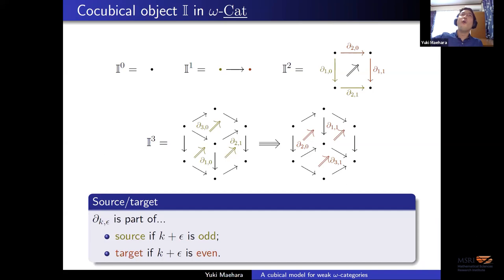If you order the directions according to the gradients, I don't have an actual proof, but at least after dimension four you can actually draw things nicely so that you get all the source things on one side and the target on the other. Anyway, this is the co-cubical object I in omega-cat. I have only defined it up to n equal three, but hopefully you get the idea.